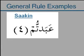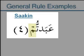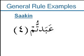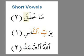Looking at some examples: here we have a word at the end of a sentence where the last letter, the meem, is already sakin, so it's pronounced as sakin as expected — that would be 'battum.' For the short vowels, if you stop on any word with fatha, kasra, or dhamma on the last letter, that letter is read as sakin. The first example would be read as 'maa khalaqa' because the qaf becomes sakin — it's one of the qalqala letters, so it gets an echo.